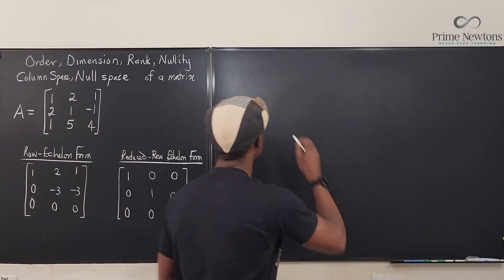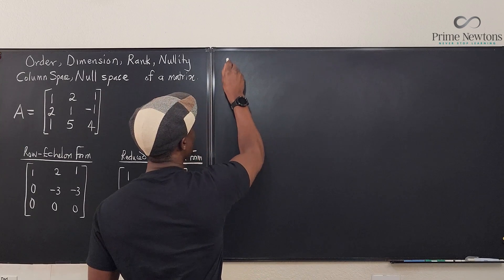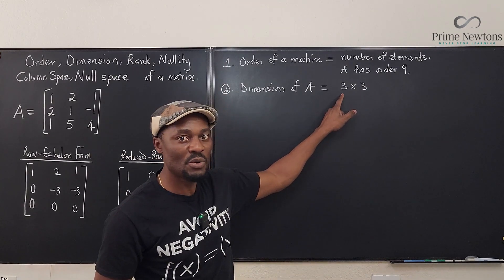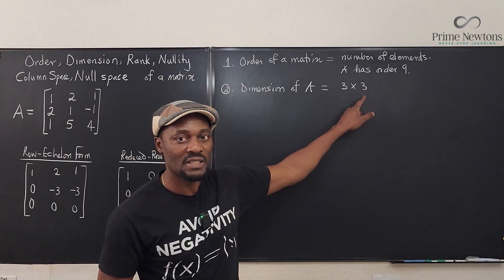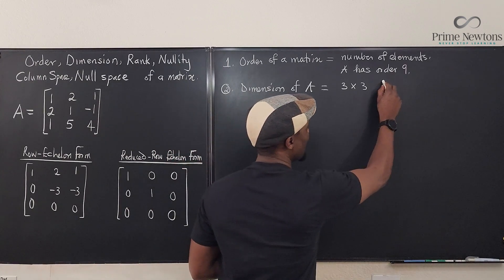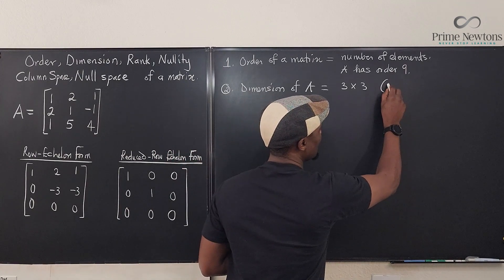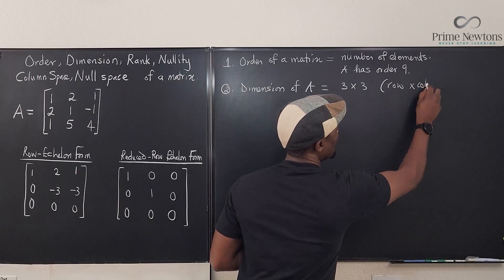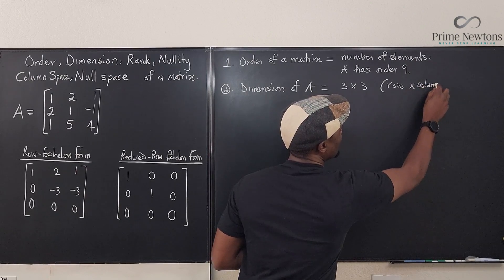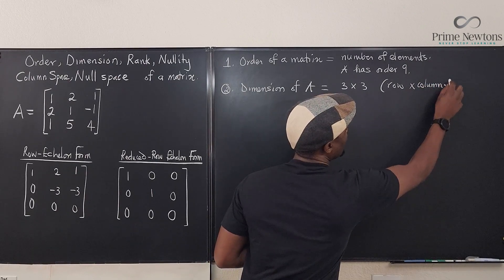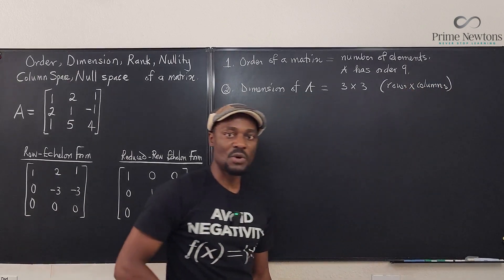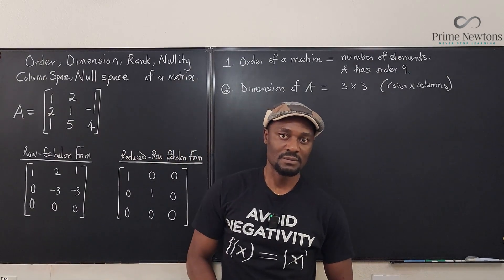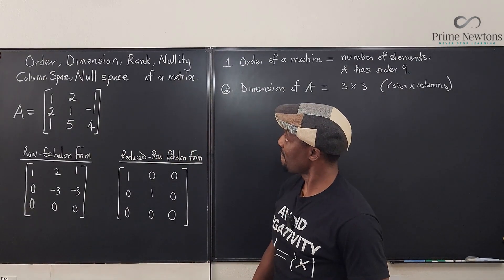So we can say number one: the order is m by n — the number of rows times the number of columns. It is basically the number of rows times the number of columns. We're done. Let's go to the next thing.